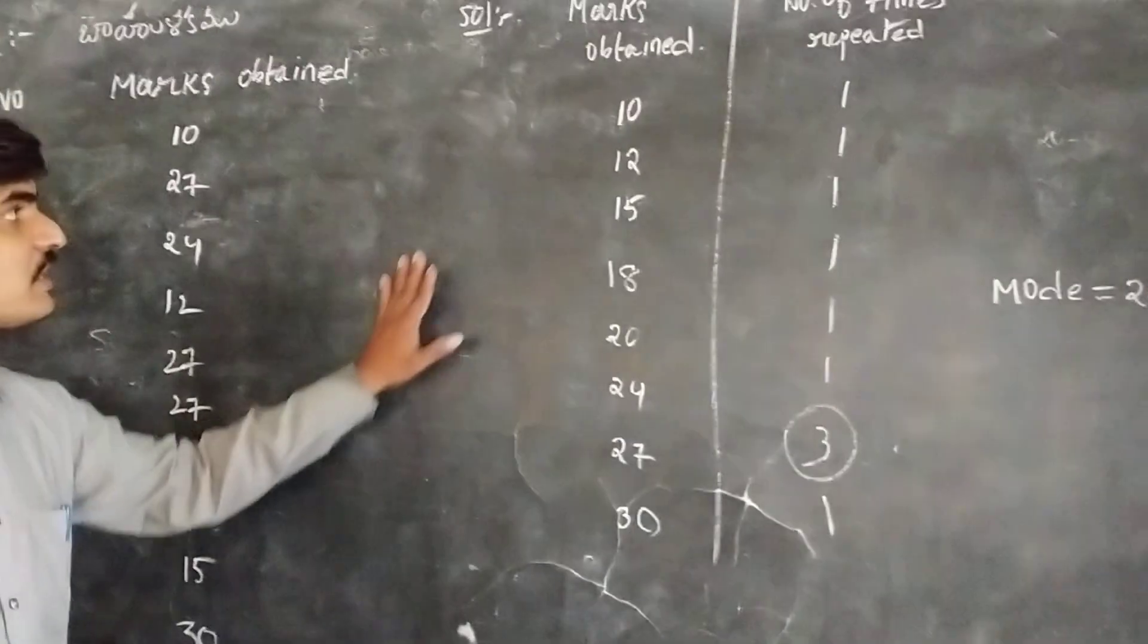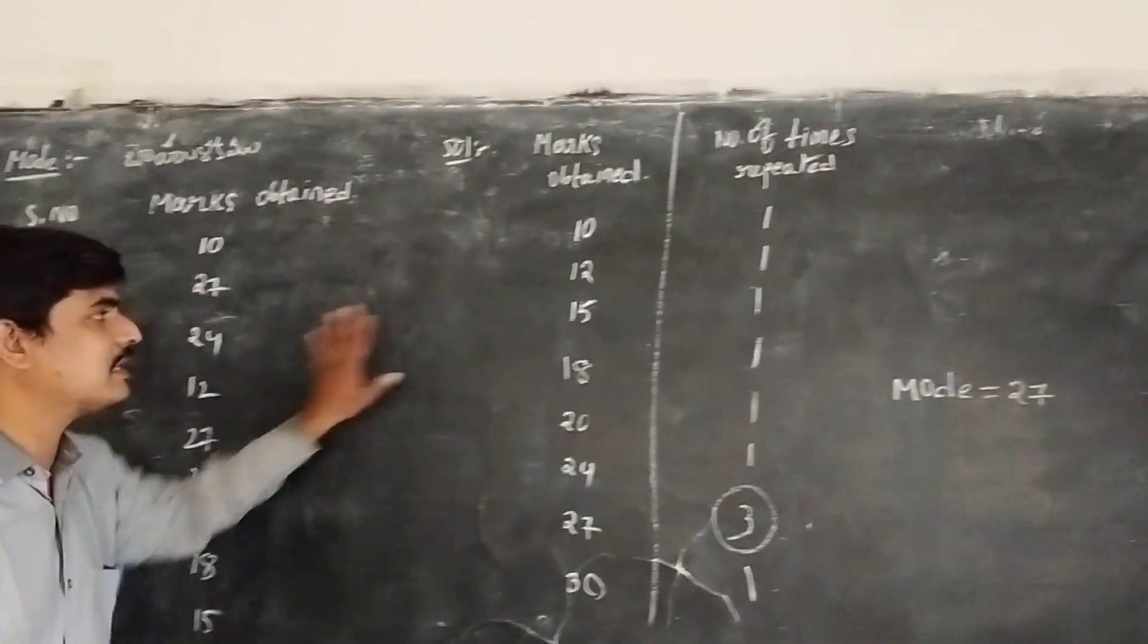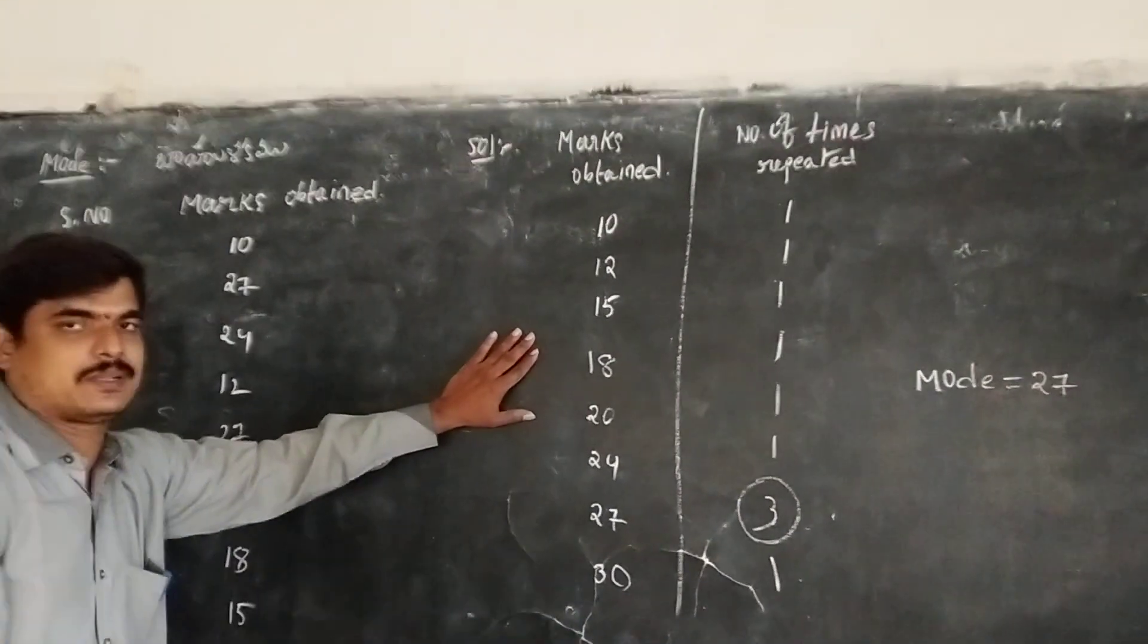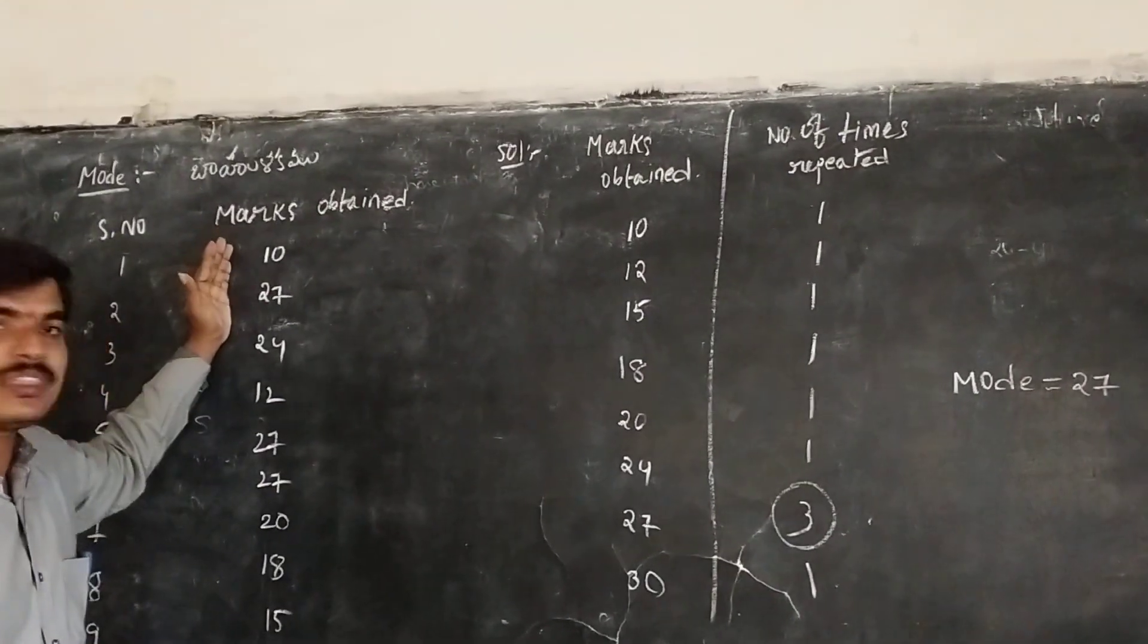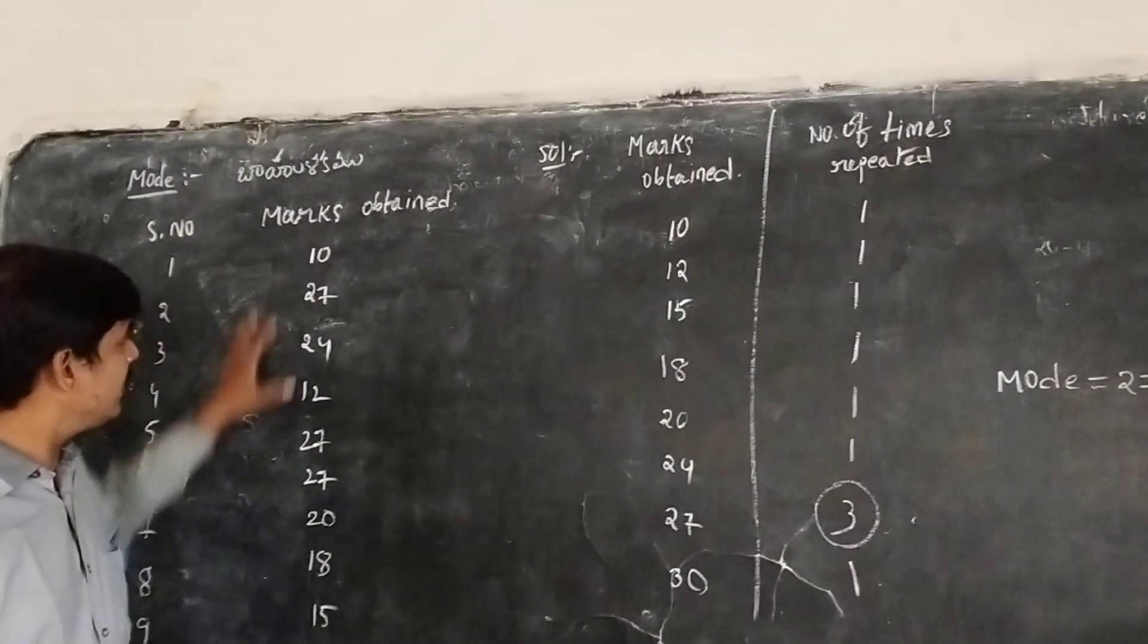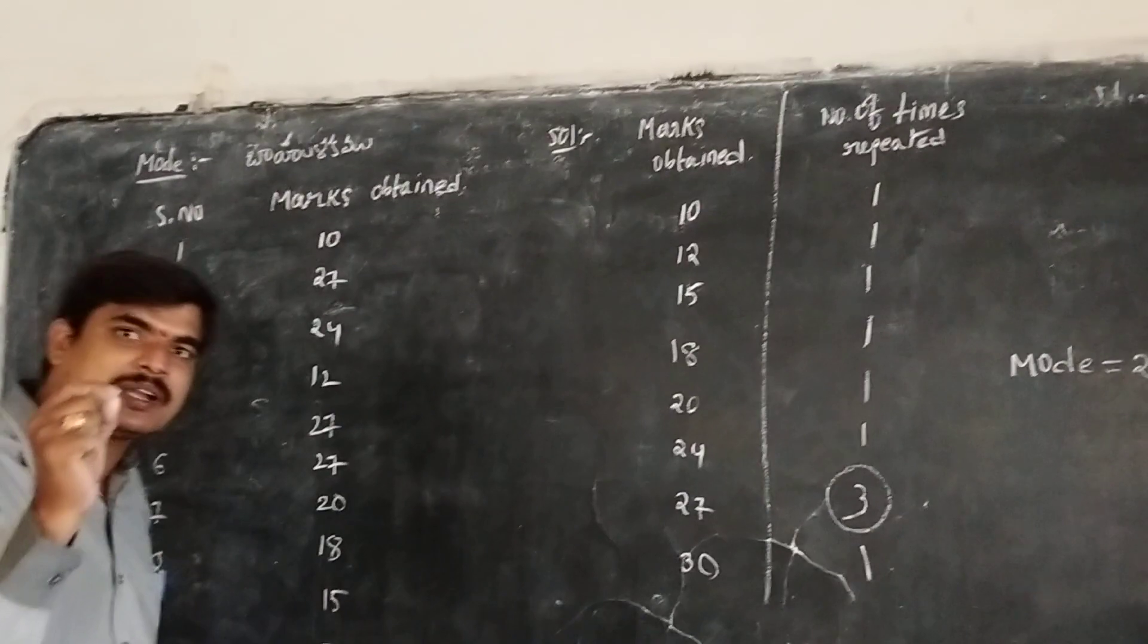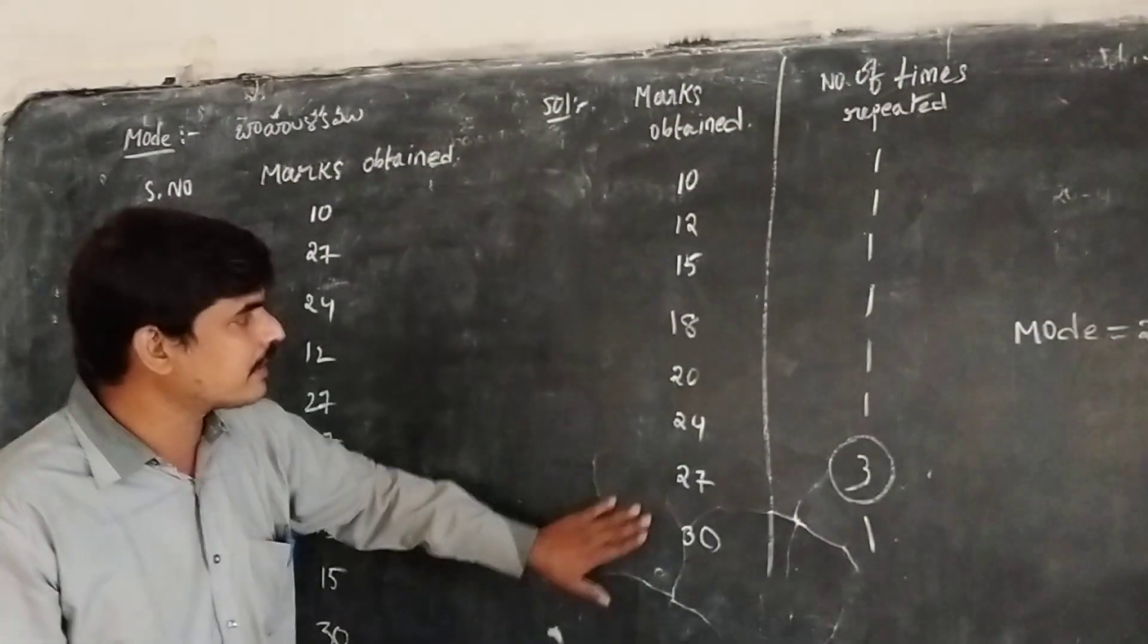For that, first of all, we need to group the given data in ascending order or descending order first. Here, we are given with the number of marks. We need to arrange these marks in a particular order. I am arranging these marks in order.